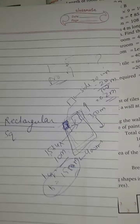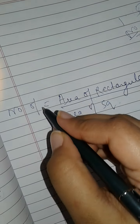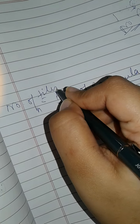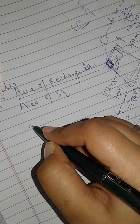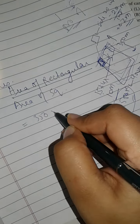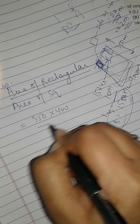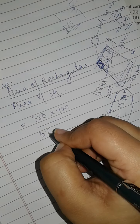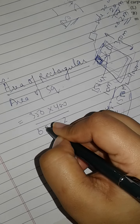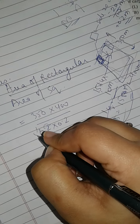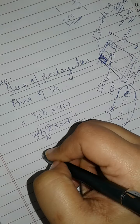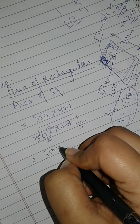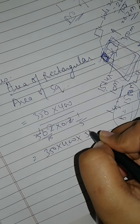Now remove the number of tiles. First, find the area of the rectangle: 350 into 400. Area of square tile: 20 into 20. So number of tiles equals 350 × 400 divided by 20 × 20. You can write this as 350 × 400 × 1/5 × 1/5, which simplifies to 350 × 400 × 5 × 5.